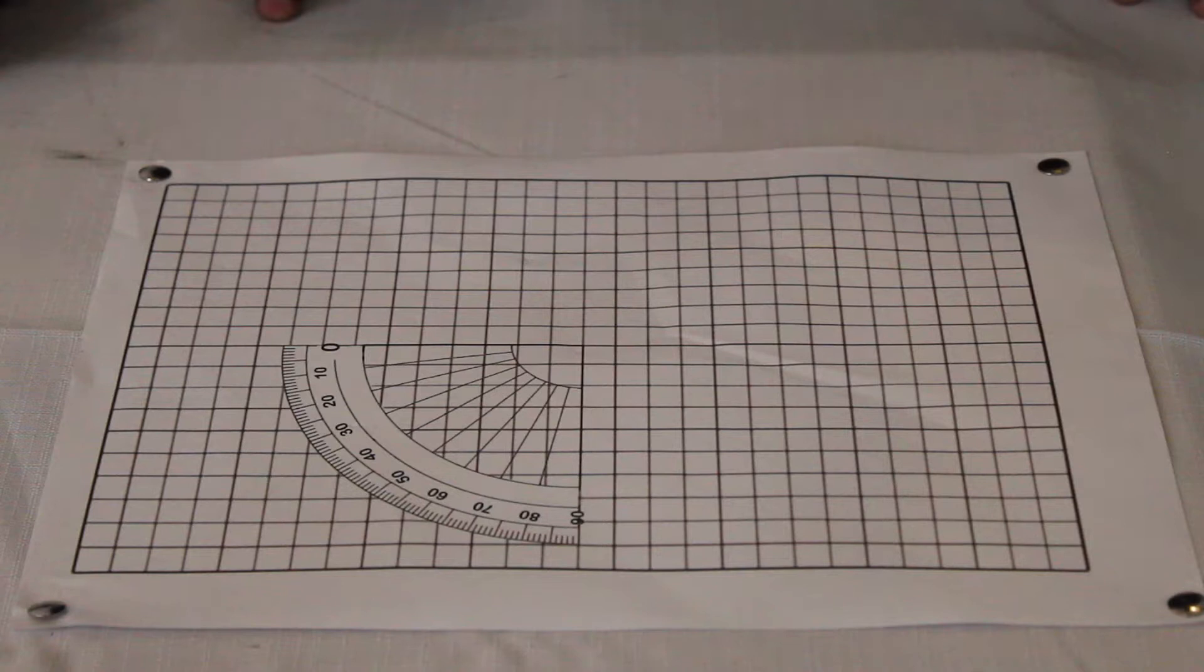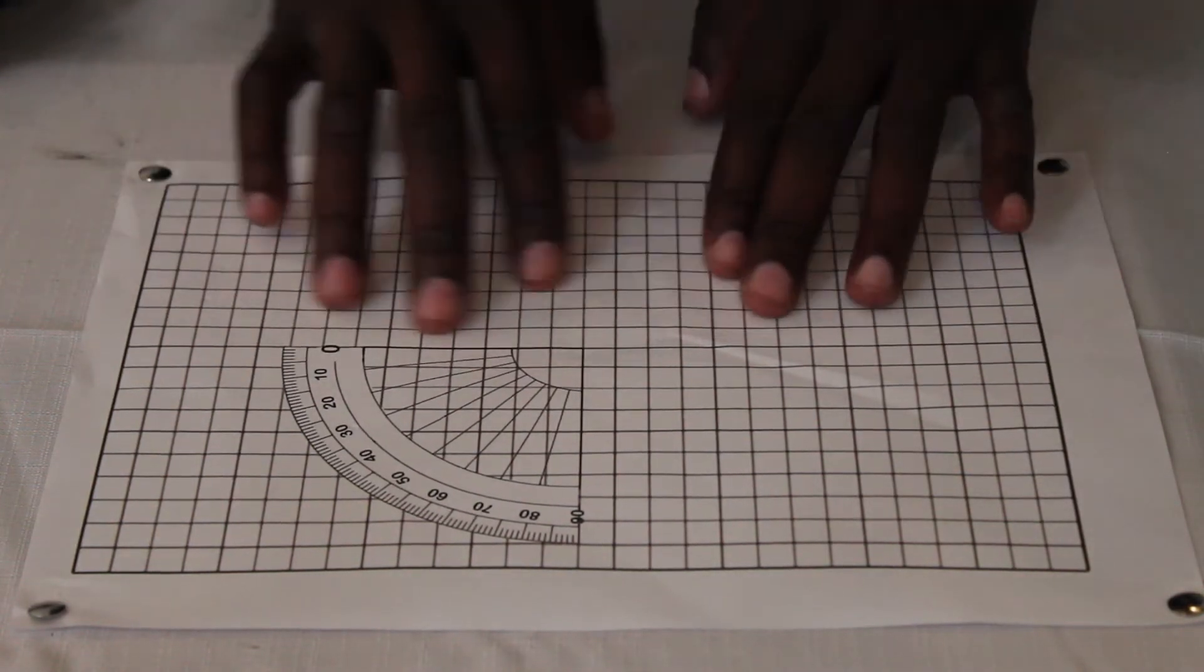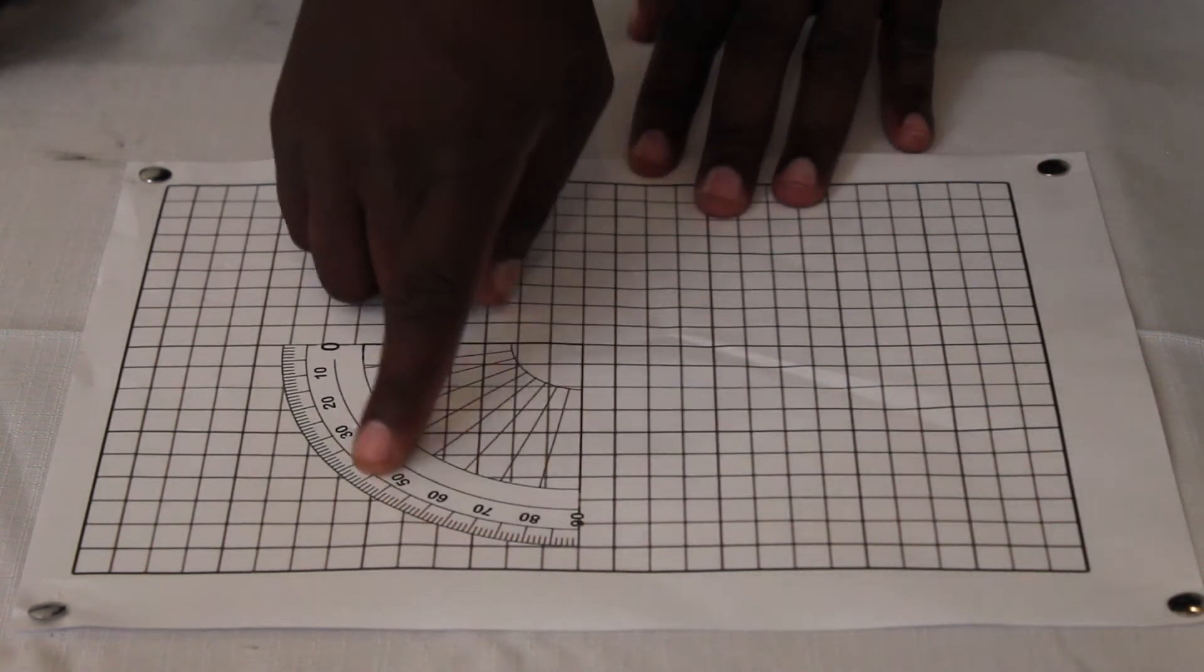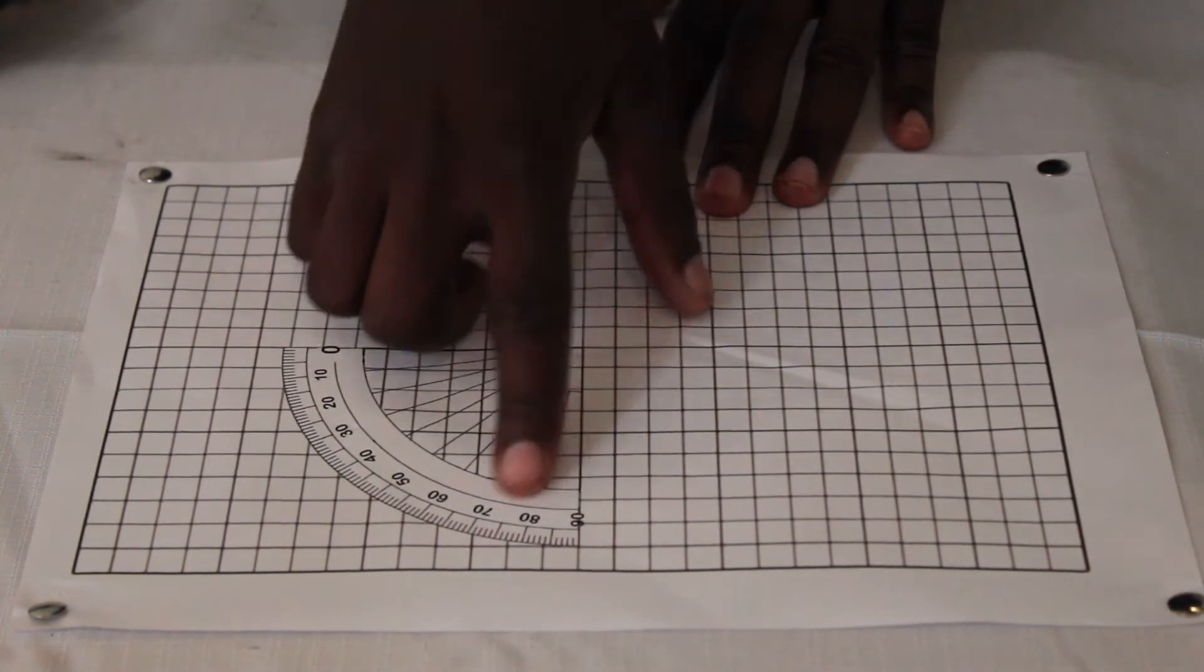However, in this case we will be dealing with the angle of refraction. So here are the apparatus that we will be using. In this case we have the paper, and in our paper we do have the diagram of the protractor.